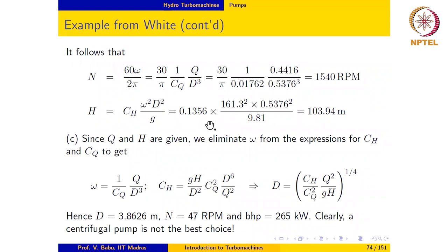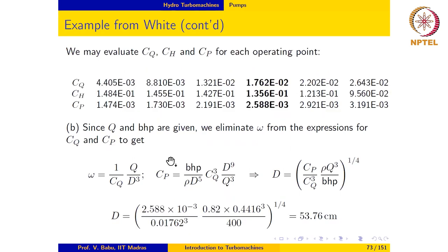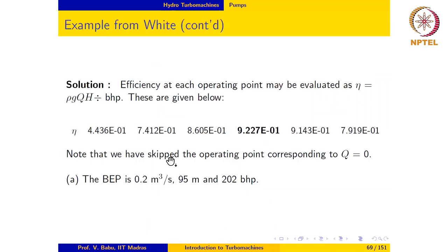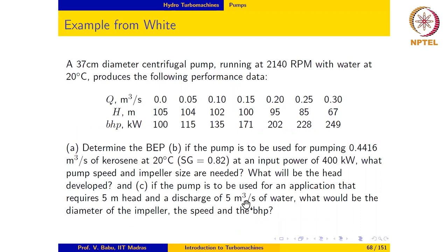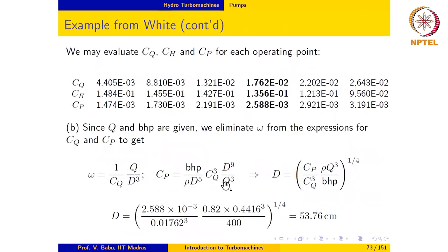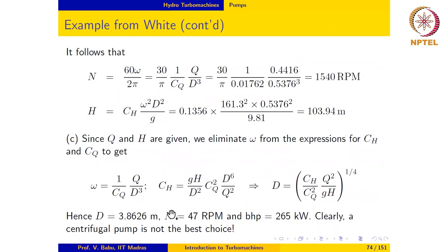Let us try and get a physical understanding of why a centrifugal pump is not a good choice for the values of Q and H that we had specified. The value of Q and H specified for this case was 5 meter head and 5 cubic meters per second of water. Looking at these values, it is apparent that the requirement calls for low head and high flow rate, and that is the reason why a centrifugal pump is not a good choice.